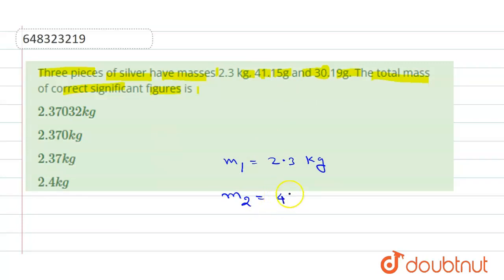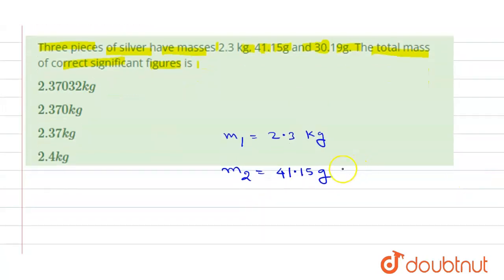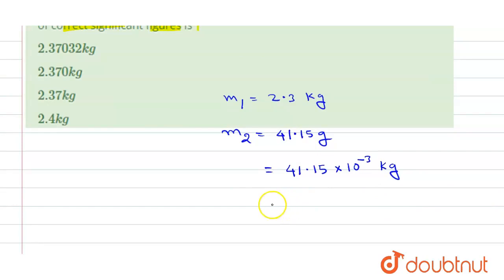Second mass is 41.15 grams, so we need to change this into the same unit, so it will be 41.15 × 10^-3 kg, or we can write 0.04115 kg.